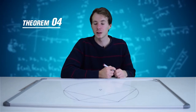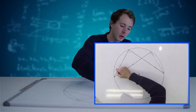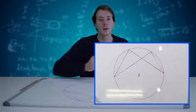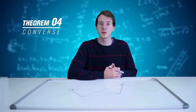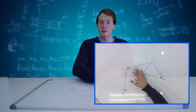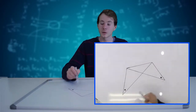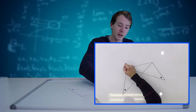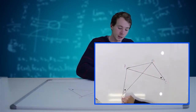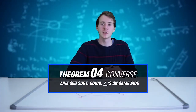Theorem 4 states that if I have angles in the same segment of a circle, these angles will be equal. The proof for this is: angles in the same segment. Theorem 4's converse states that if I have a line segment joining two points, and this line subtends two equal angles at two other points, then all four points — A, B, C, and D — are going to be concyclic. The reason is: line segment subtends equal angles on the same side.